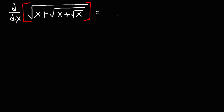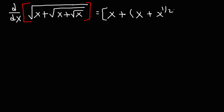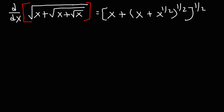The first thing we need to do is rewriting. What we have is x plus parentheses x plus x to the half, raised to the half — x to the half is the square root of x. And then this is raised to the half, that's this square root symbol here. And then everything is raised to the half for the square root that encompasses everything.